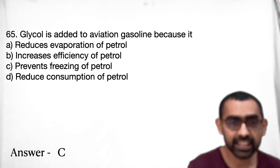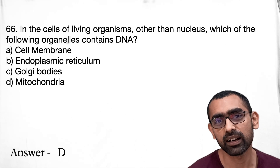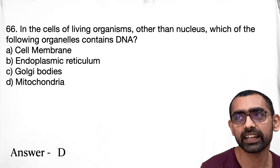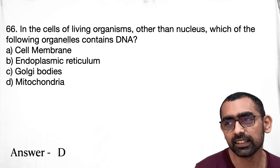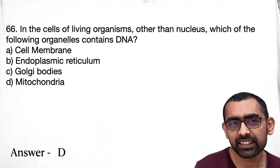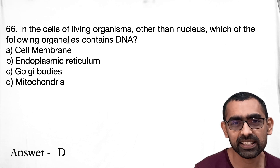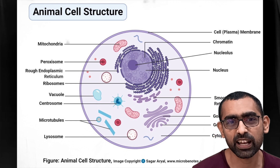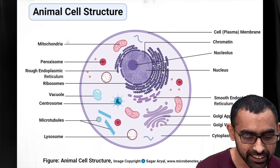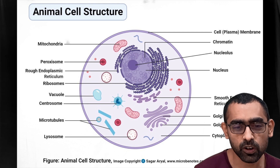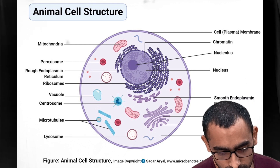Question 66 is a direct question from basic biology about the structure of the animal cell. These are very basic things — we study plant cell and animal cell structures and compare them. In this context, DNA is found mostly in the nucleus but also in the mitochondria.